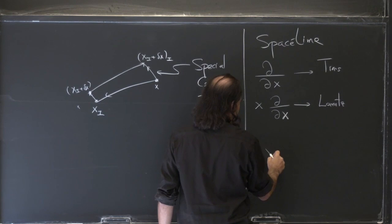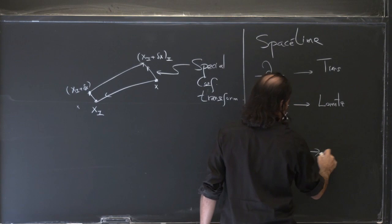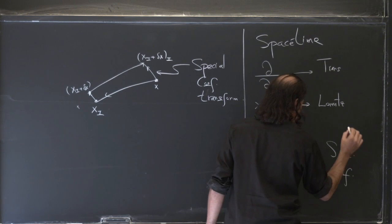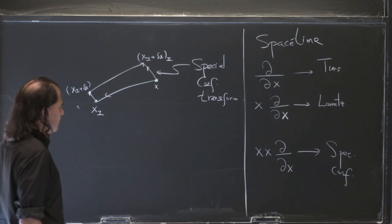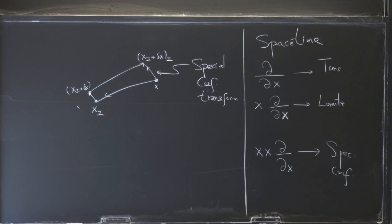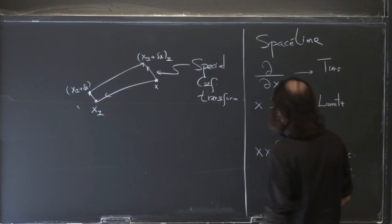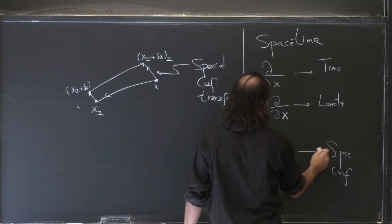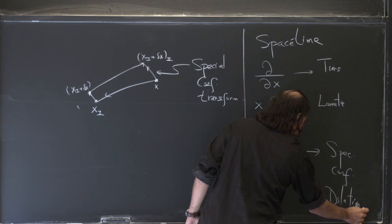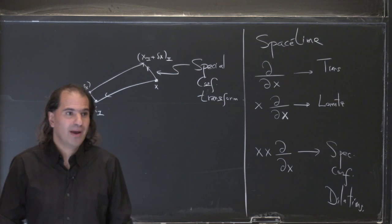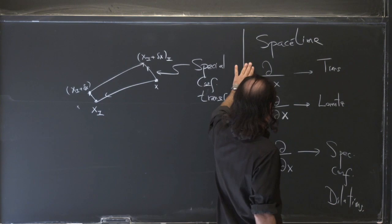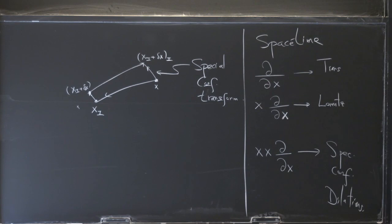And then these interesting special conformal transformations look like x²·d/dx. Together with the dilations — so just the overall rescaling — all of these give us a 15-parameter set of symmetries in four-dimensional space-time. So we have 4 plus 6, another 4 of these special conformal transformations plus the dilations makes 15.